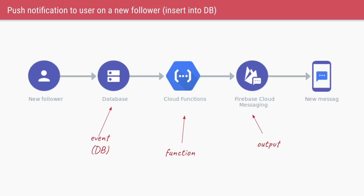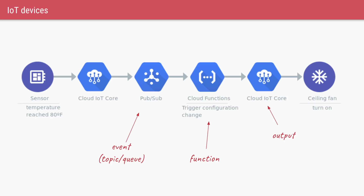An event can also be generated by a database. For example, in a social media app, whenever there is a new follower — an insertion of a record in the database — you can configure your cloud provider to generate an event on that record insertion. Finally, you can also use publish-subscribe (Google Cloud's Pub/Sub topics and queues) to generate an event. For instance, a smart home temperature sensor can push an event to Pub/Sub when temperature crosses 80°F, which triggers a function that sends a command back to the device to turn on the AC or fan.